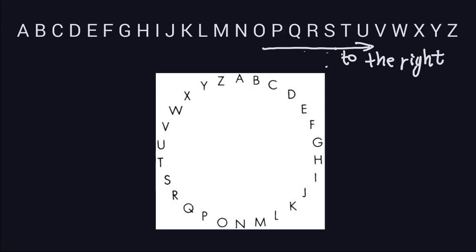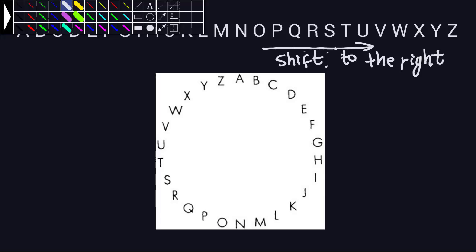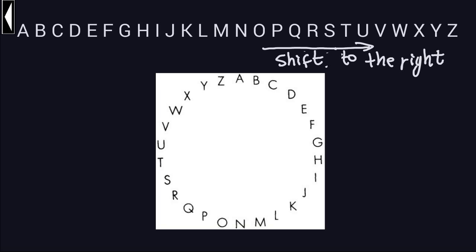The couple of examples that we did in this class so far was three units to the right. Now that kind of shifting to the right, because we are assuming that we have the arrangement of the letters in the circular manner, shifting to the right will actually correspond to moving in this direction, which is clockwise.